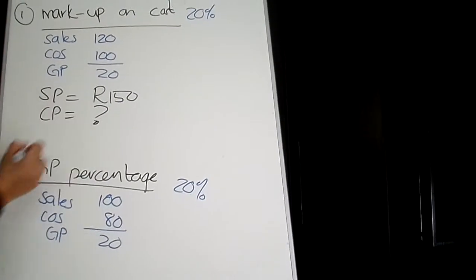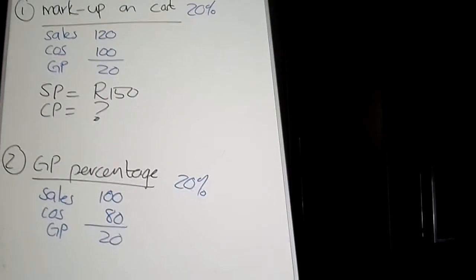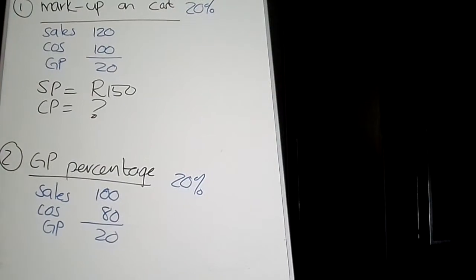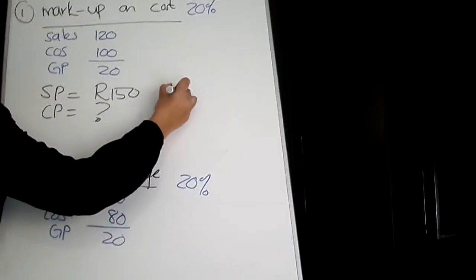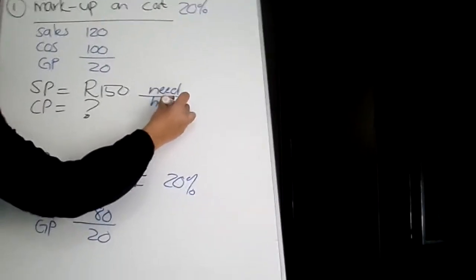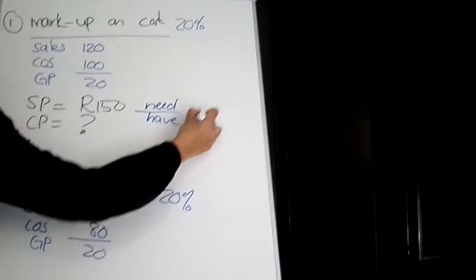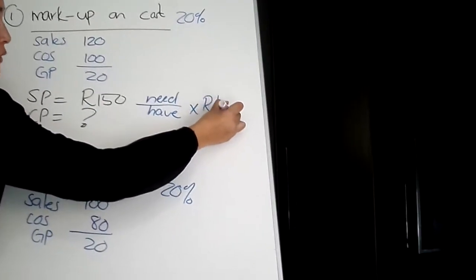It's a very simple formula which you can use. You need to say what I need divided by what I have, multiplied by the Rand value of what I have.